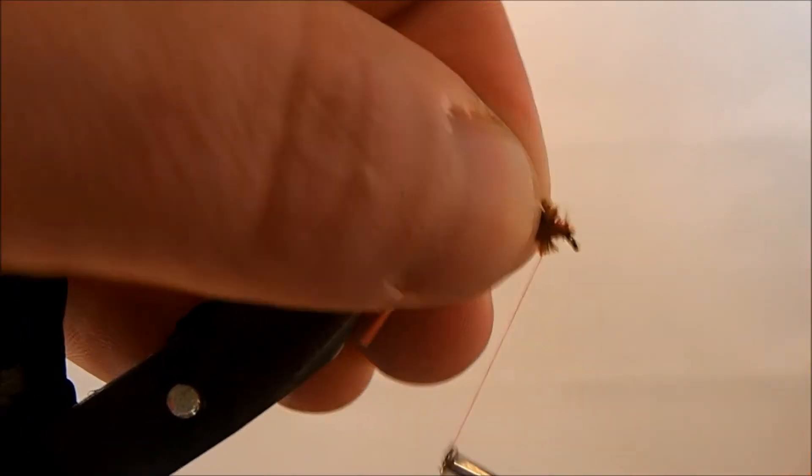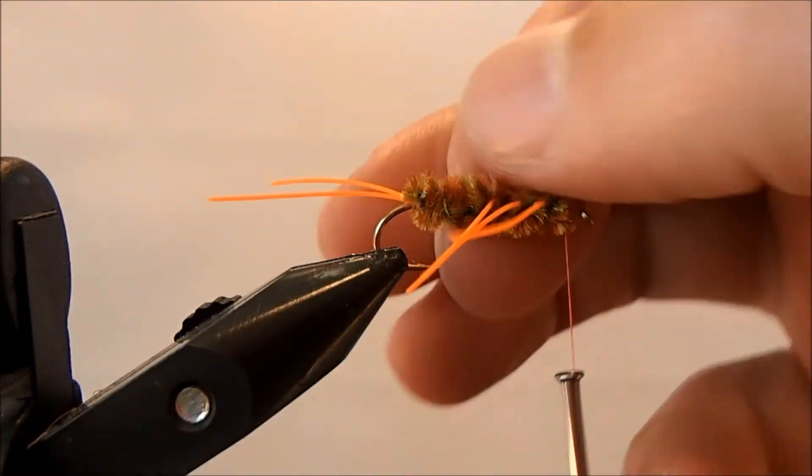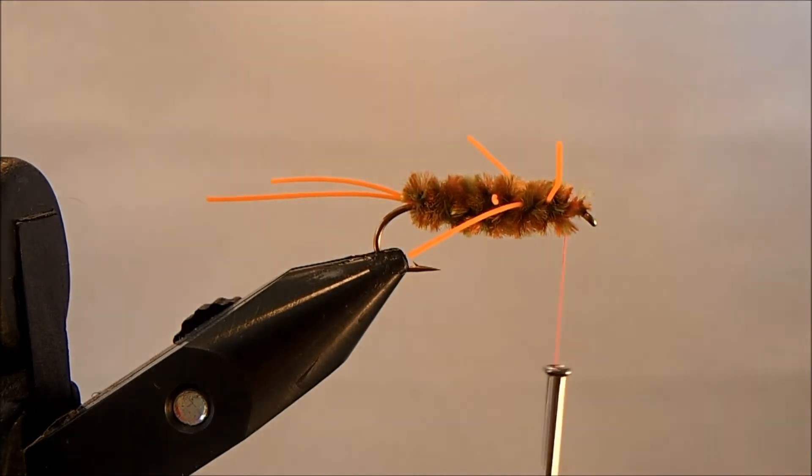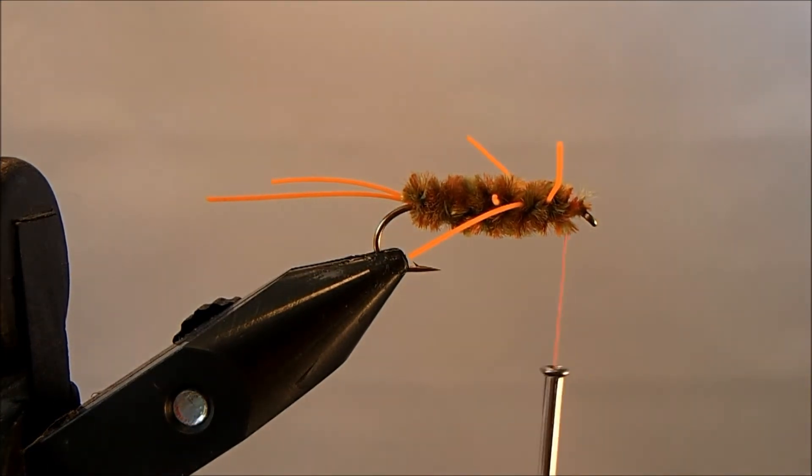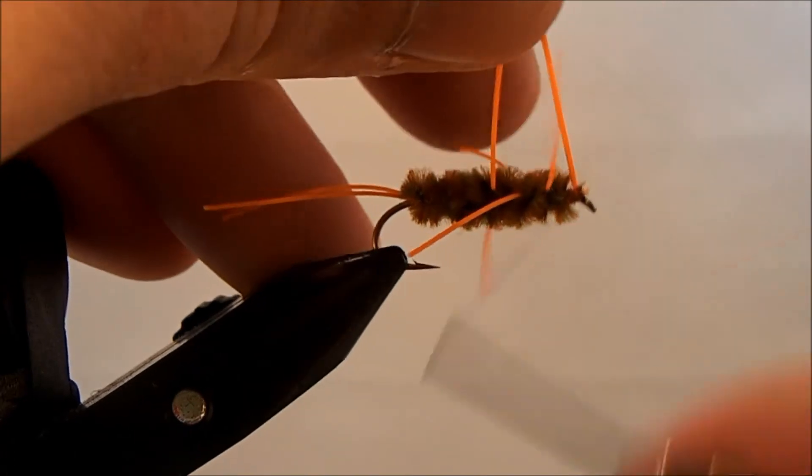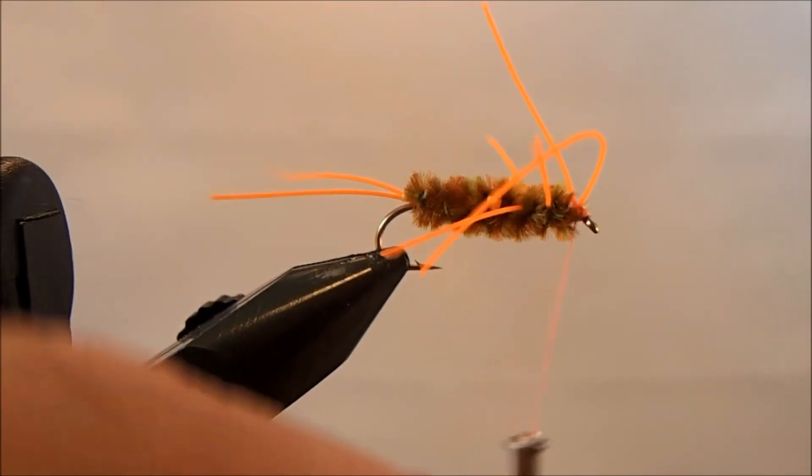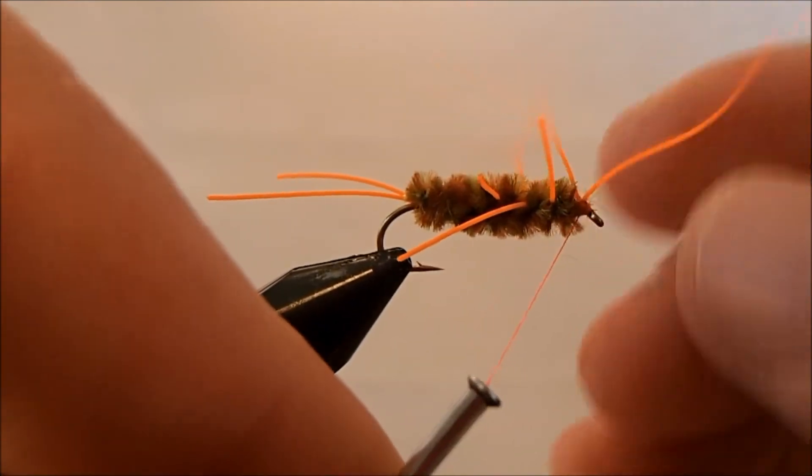I'm going to take a couple wraps back away from the eye because I'm going to tie in a set of antenna. I'll take my same rubber leg material and bend it over the thread one more time. This time I want it to lay forward. I'll bring those up.